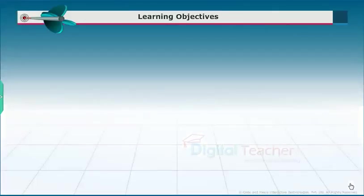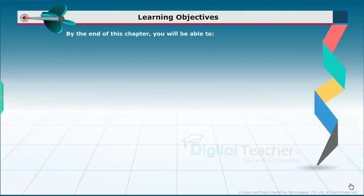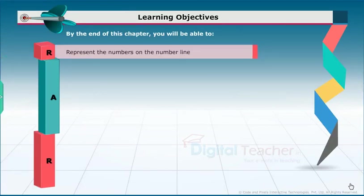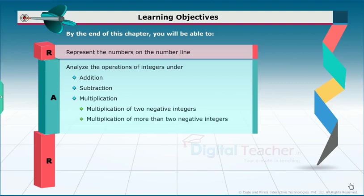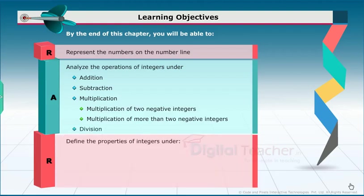Learning Objectives. By the end of this chapter, you will be able to: represent numbers on the number line; analyze the operations of integers under addition, subtraction, multiplication — including multiplication of two negative integers and multiplication of more than two negative integers — and division; and define the properties of integers under addition, multiplication, subtraction, and division.